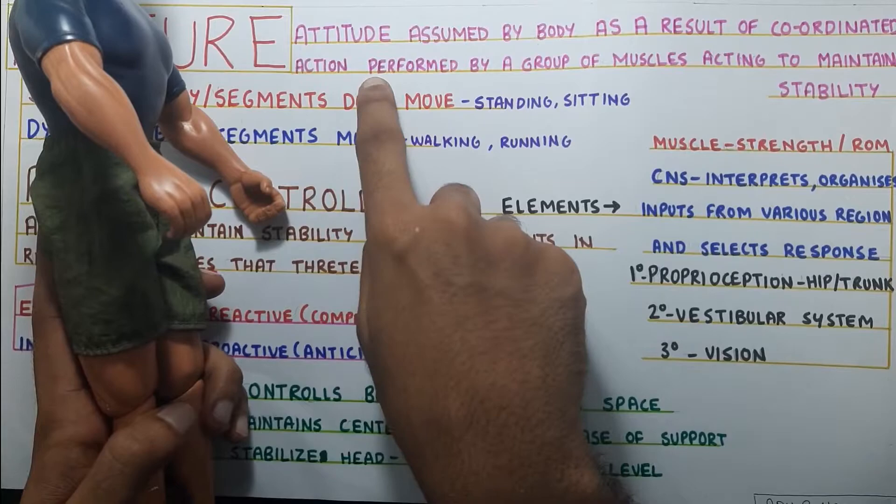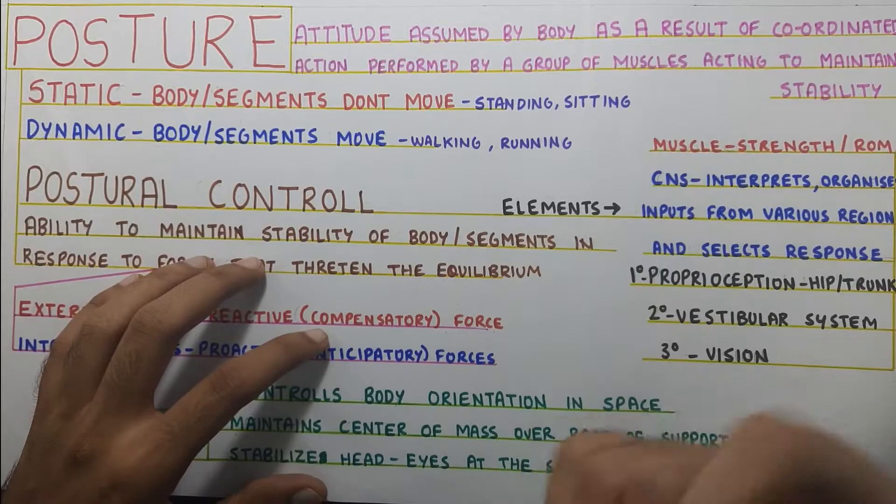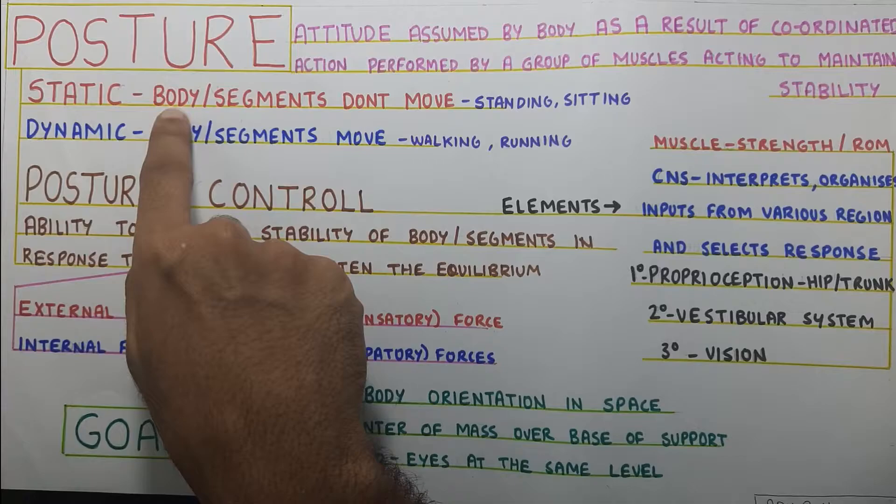If you are not familiar with the word stability, check out my video on that — I've talked about stability in the base of support video and also discussed the difference between stability and balance. The two types of posture are dynamic and static. Static is basically when the body or its segments don't move, whereas dynamic is when the body and segments move, like walking and running.